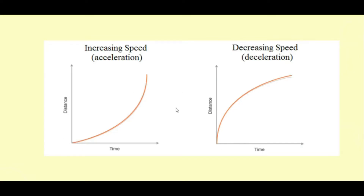There are two types of curves: one shows increasing speed, which is acceleration, and another shows decreasing speed, which is deceleration. Both are non-uniform motion. We have seen uniform and non-uniform acceleration — these curved graphs represent both types of non-uniform acceleration.